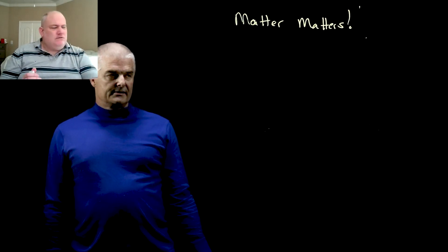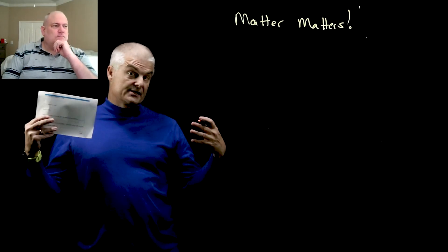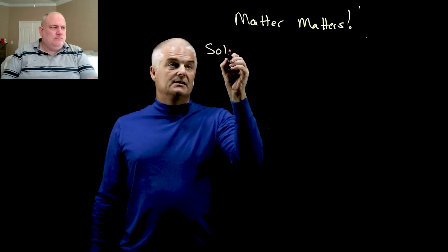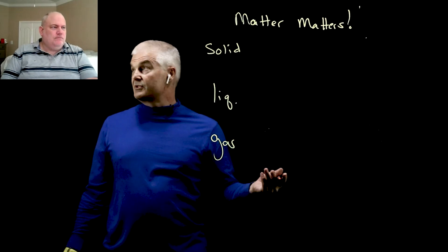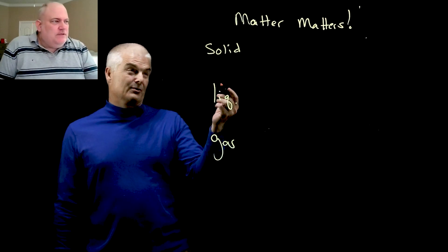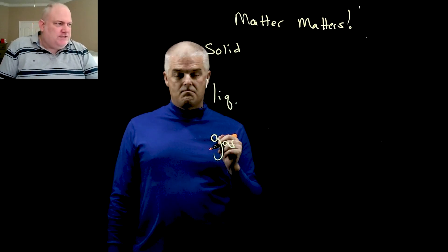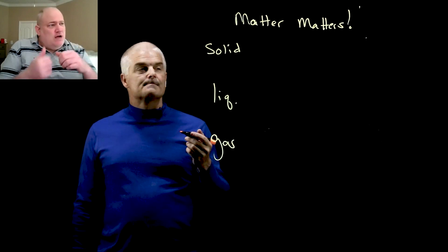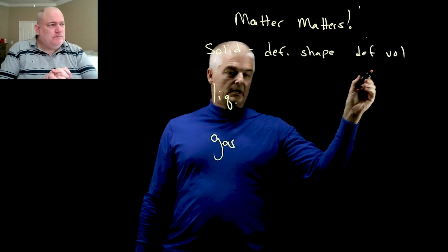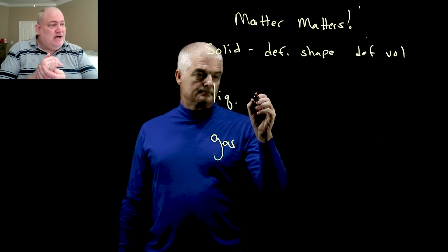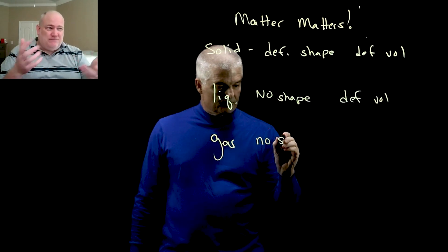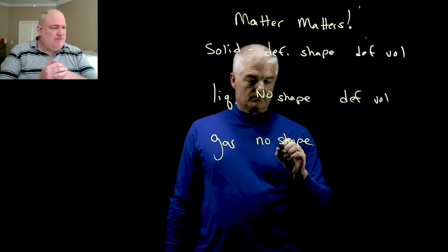The last thing we want to talk about today is that when we talk about matter, there are actually some states of matter. And we've already talked about these, right? We've got solids, liquids, and gases. So Mr. D, what's the difference between a solid, a liquid, and a gas? Let's get some hard definitions in here. A solid has definite shape and definite volume. A liquid has no definite shape, but definite volume. And a gas, if you can follow the trend here, has no definite shape and no definite volume.